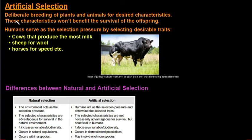Artificial selection, so this is the deliberate breeding of plants and animals for desired characteristics. Now these characteristics won't benefit the survival of the offspring. It's not necessarily beneficial. In fact, there can be multiple complications that arise because of these characteristics that us as humans have selected and have found desirable.